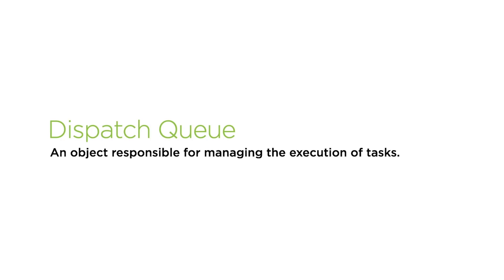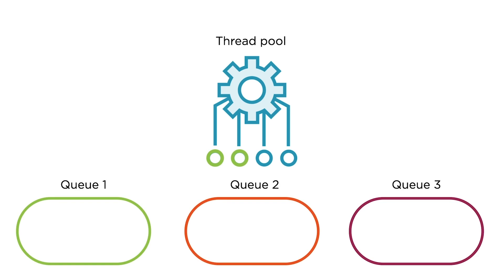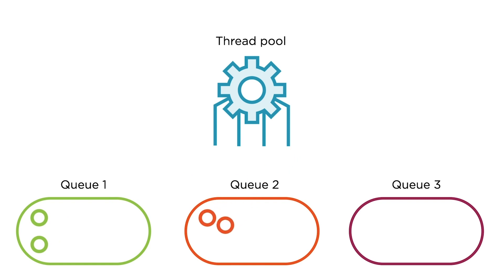A dispatch queue is an object responsible for managing the execution of tasks. When we submit a task to a dispatch queue, the system takes care of the thread management part. The thread comes from a pre-created pool of threads reserved for task execution. These threads are created once and reused whenever necessary to prevent the overhead of thread spawning and destruction.